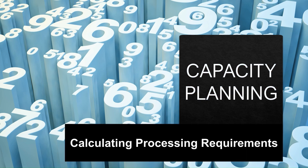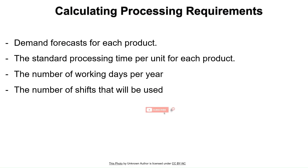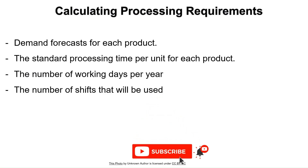Here the processing requirement calculation is explained. To calculate the capacity requirements to process some products, the following pieces of information have to be known: reasonably accurate demand forecasts for each product, the standard processing time per unit for each product, the number of working days per year, and the number of shifts that will be used.